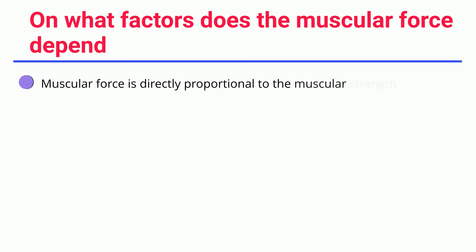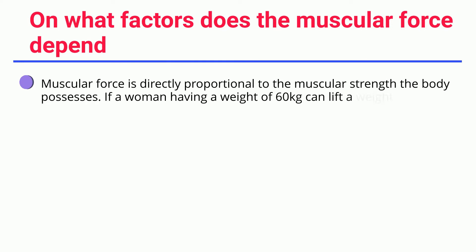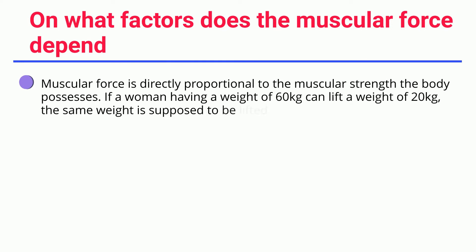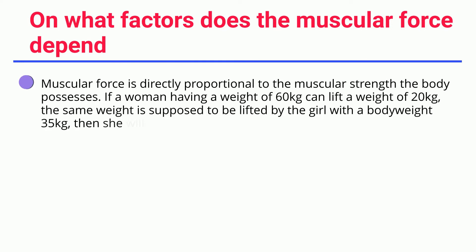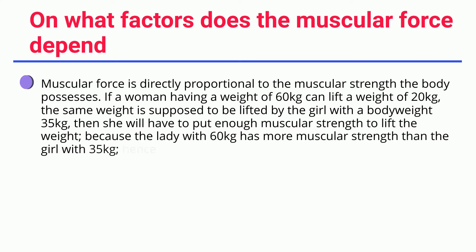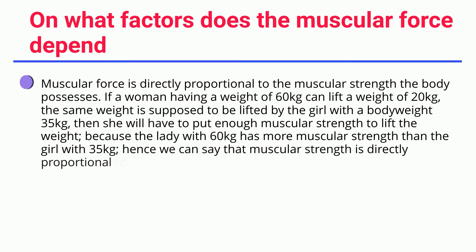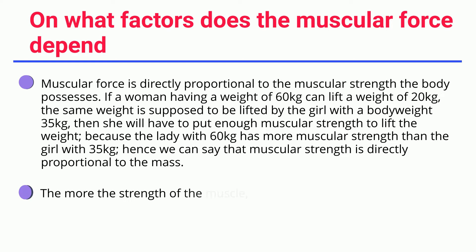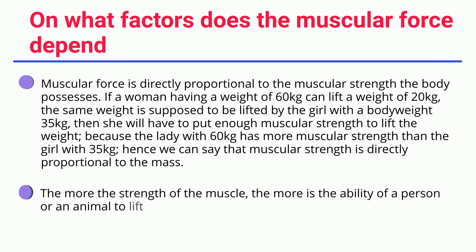Muscular force is directly proportional to the muscular strength the body possesses. For example, if a woman weighing 60 kilograms can lift a weight of 20 kilograms, and the same weight is to be lifted by a girl weighing 35 kilograms, the girl will have to exert more effort. Because the woman with 60 kilograms has more muscular strength, we can say muscular strength is directly proportional to mass. The more the strength of the muscle, the greater the ability to lift or move objects.